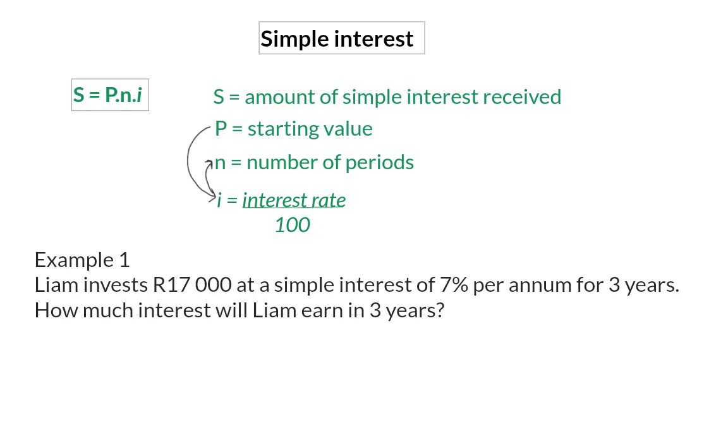Example 1. Liam invests 17,000 Rand at a simple interest rate of 7% per annum for 3 years. How much interest will Liam earn in 3 years?